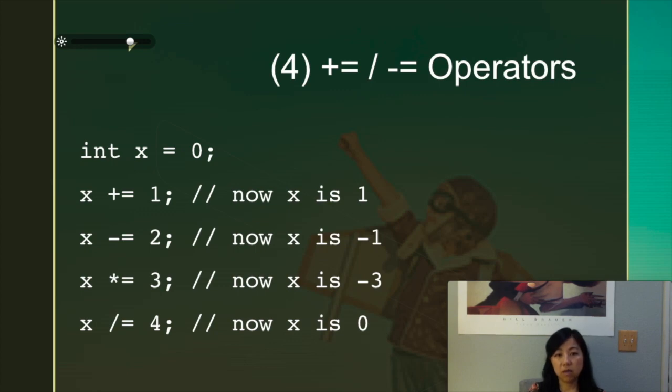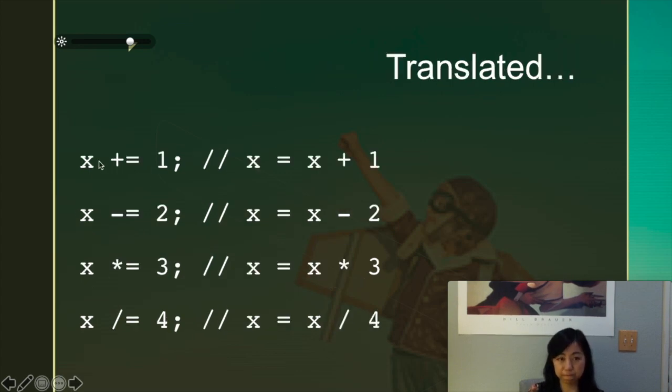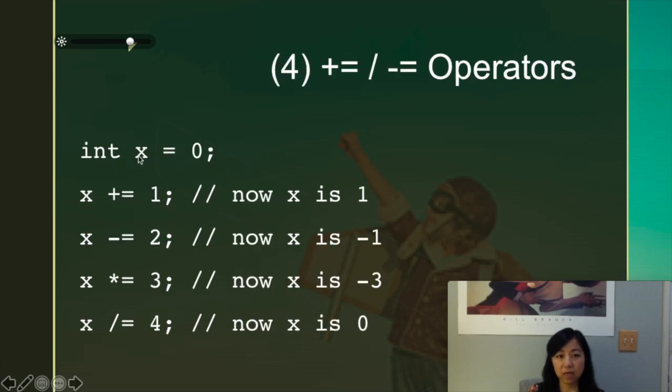Now, this one actually is a lot of trouble also. So basically, what it does is to operate using this operator in front of the assignment onto the original value and then assign it back to X. So basically, X plus equal 1 can be translated to X is equal to X plus 1. So you basically put the X in the front and then put the operator here and then the value after the equal sign. So here, X is equal to 0 in the beginning. So if X plus 1 is equal to 1, so now X has a value of 1.